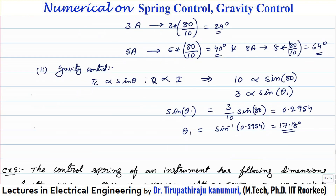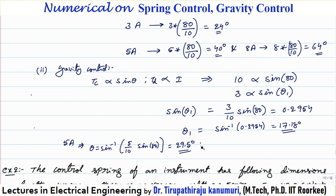For 5 amperes, theta equals sin⁻¹(5/10 × sin 80°), giving 29.5 degrees. For 8 amperes, theta equals sin⁻¹(8/10 × sin 80°), giving 51.985 degrees.